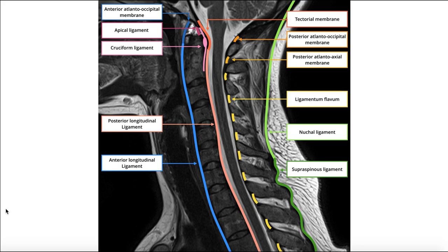This last picture illustrates where certain ligaments and membranes are continuous with others. Anteriorly, we have the anterior atlanto-occipital membrane — between the occiput and the atlas, but more membranous in nature. Once you get down, it becomes continuous with the anterior longitudinal ligament, which runs on the anterior surface of the vertebral bodies all the way down the spine. So up at the top it's just the anterior atlanto-occipital membrane, but it becomes the anterior longitudinal ligament. There is also an anterior atlanto-axial membrane — not shown here — but it is also continuous with the anterior longitudinal ligament.